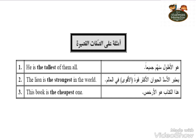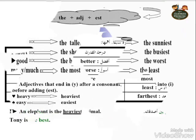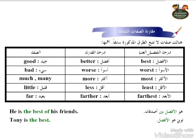The line is the strongest in the world. This book is the cheapest one. Subject, then verb to be — am, is, or are — then the adjective with 'est.' If the adjective ends in 'y,' we remove the 'y' and add 'iest.' Like 'heavy' becomes 'heaviest,' and 'easy' becomes 'easiest.'